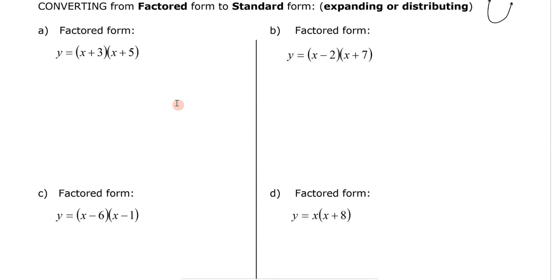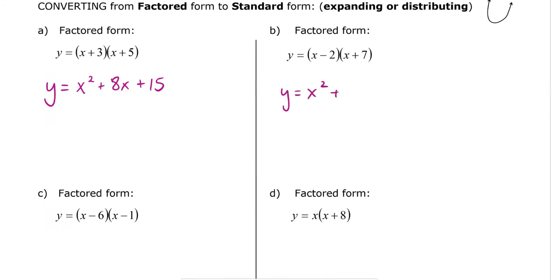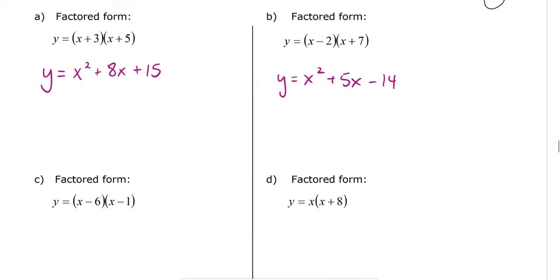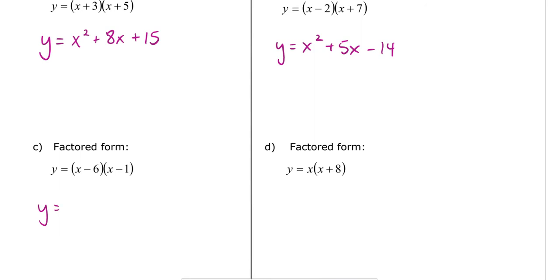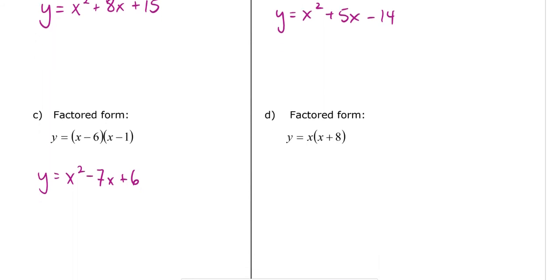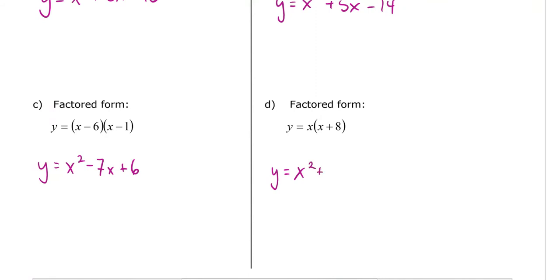Hopefully you've had a chance to practice expanding those four questions. If you need to review, you can look at the previous video, Lesson 6. If you did this correctly, the answers are as follows. For Part A, the standard form is y equals x squared plus 8x plus 15. For Part B, y equals x squared plus 5x minus 14. For Part C, y equals x squared minus 7x plus 6. And for Part D, y equals x squared plus 8x.